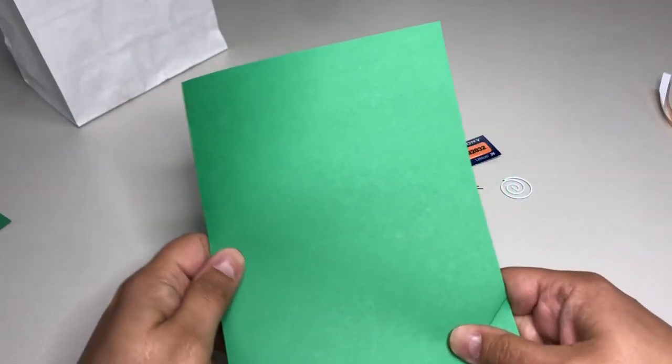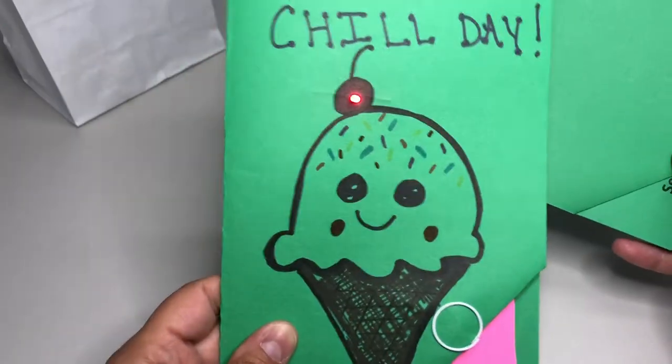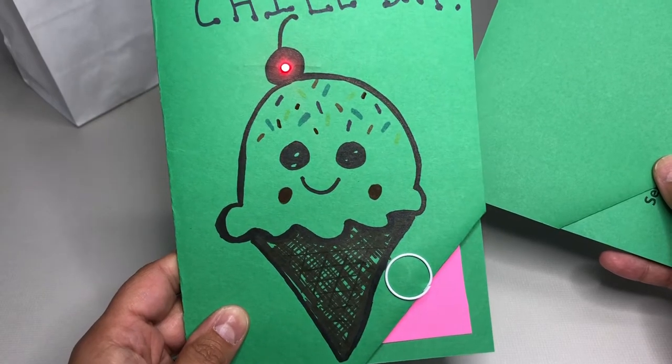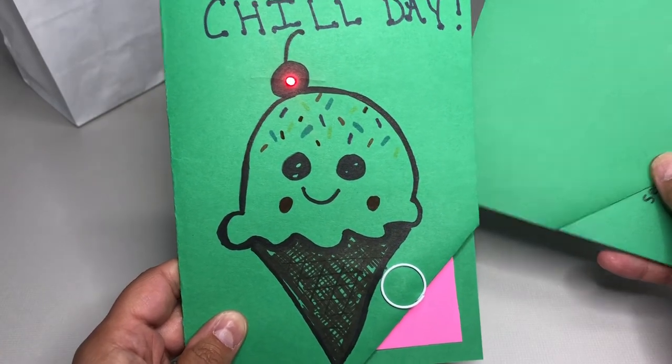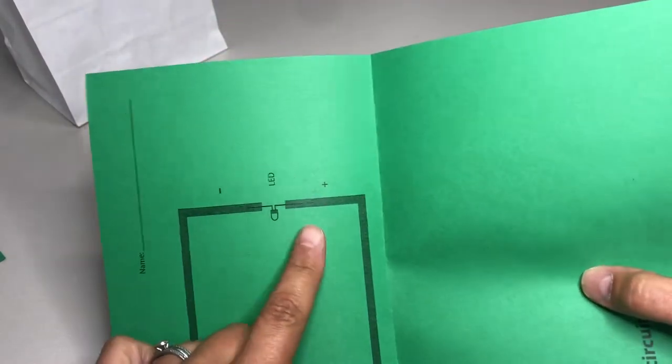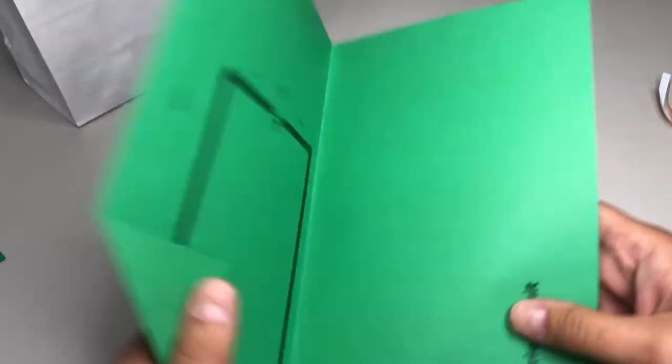Now you can do the ice cream cone like me. There's a tutorial from Art Hub for Kids where they draw this ice cream cone, or you can come up with your own design. You will want to poke holes where the LED light will go. That way you know how to draw your card.